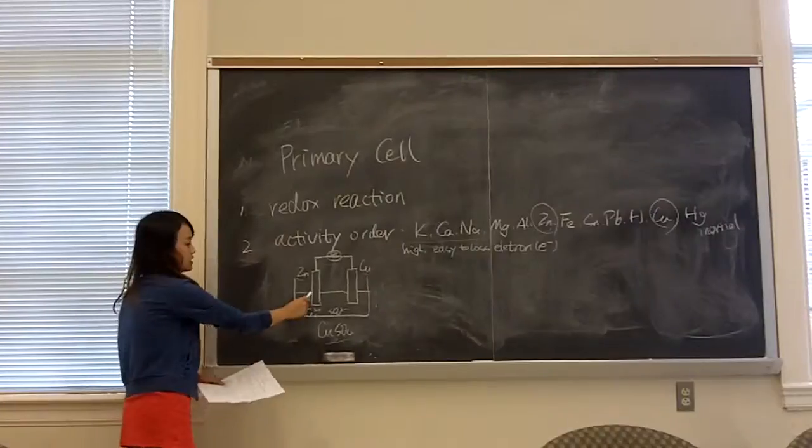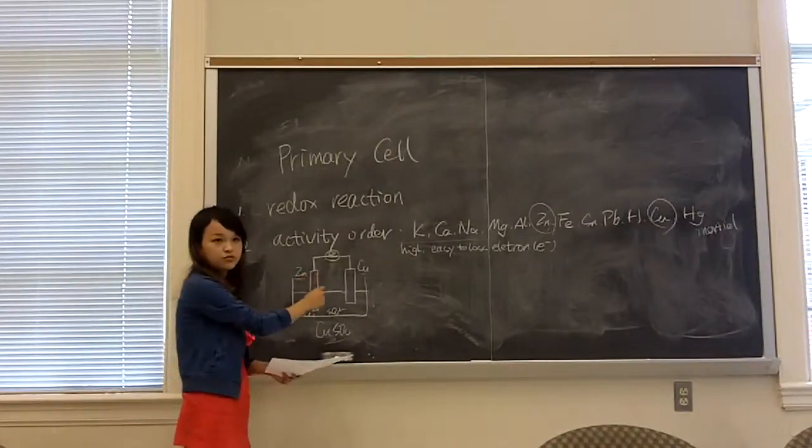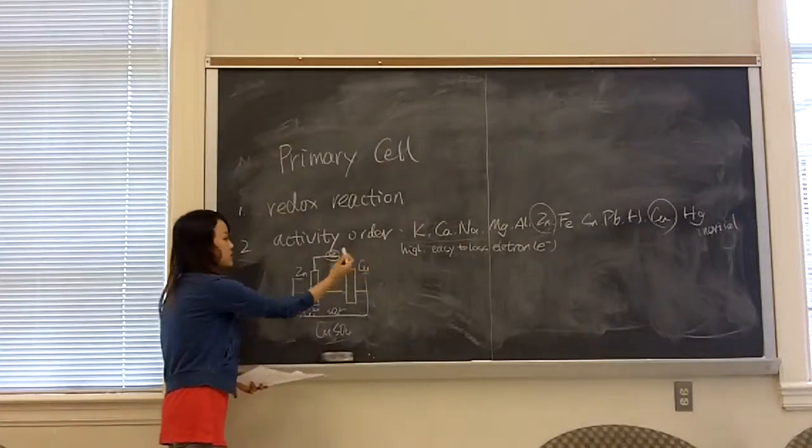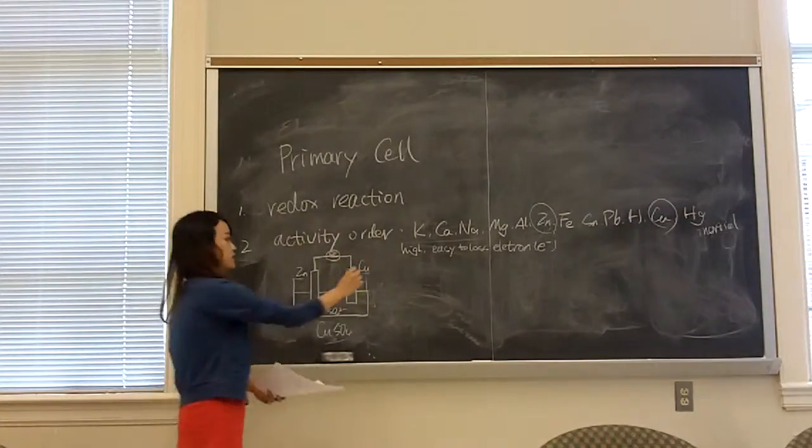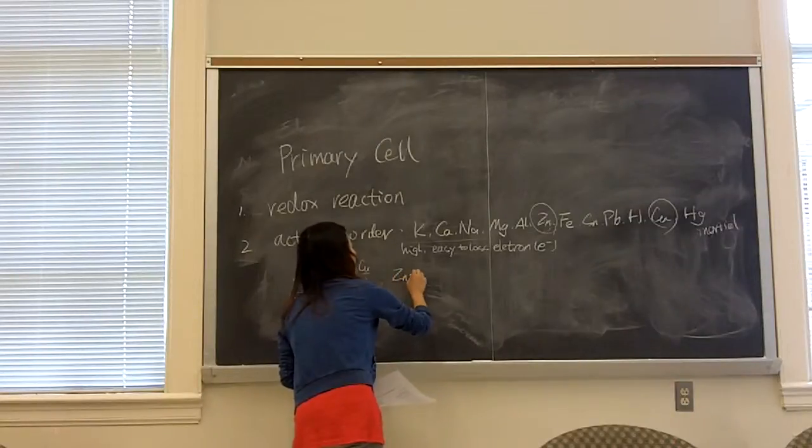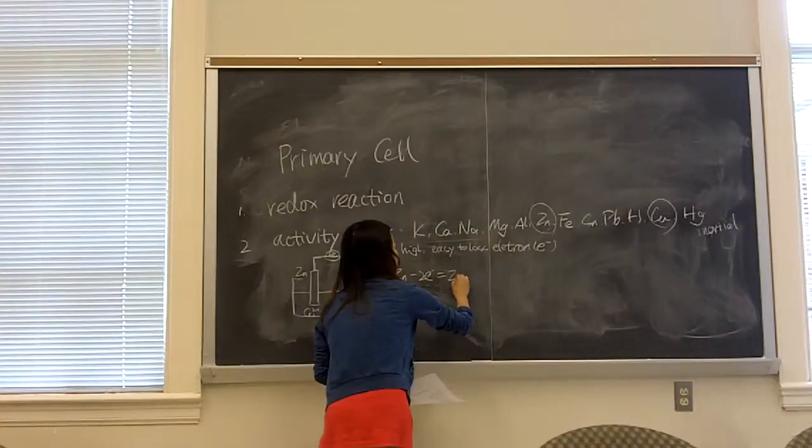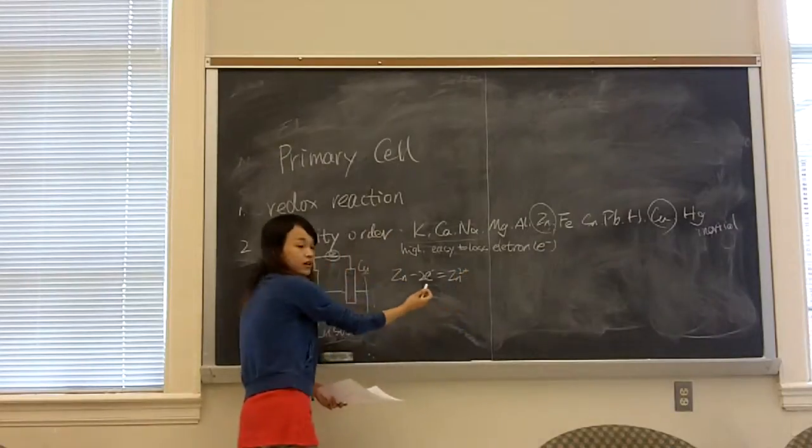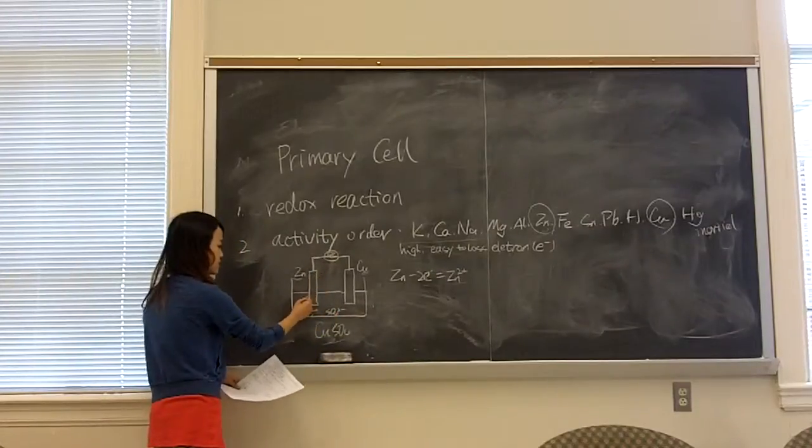When I put this pair here, I think because zinc is much more active than copper, so zinc is going to lose its electron. To become a zinc ion and like this, the ion in the solution and the electron can move in this way.